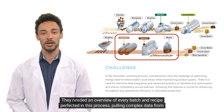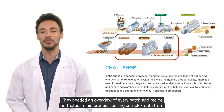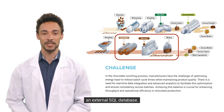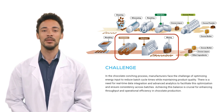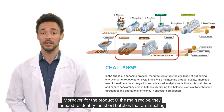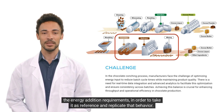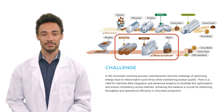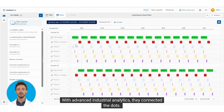They needed an overview of every batch and recipe perfected in this process, pulling complex data from an external SQL database. Moreover, for Product C — the main recipe — they needed to identify the short batches that are meeting the energy addition requirements, in order to take them as reference and replicate that behavior.